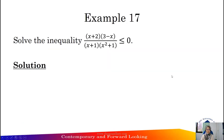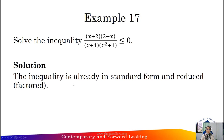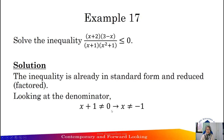Example 17: Solve the inequality (x + 2)(3 - x) divided by (x + 1)(x² + 1) less than or equal to 0. The inequality is already in standard form and factored. Looking at the denominator, x + 1 cannot equal 0, otherwise it becomes undefined.